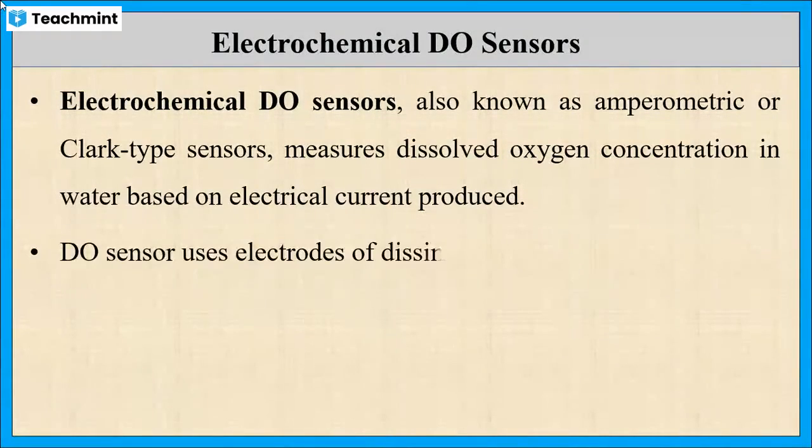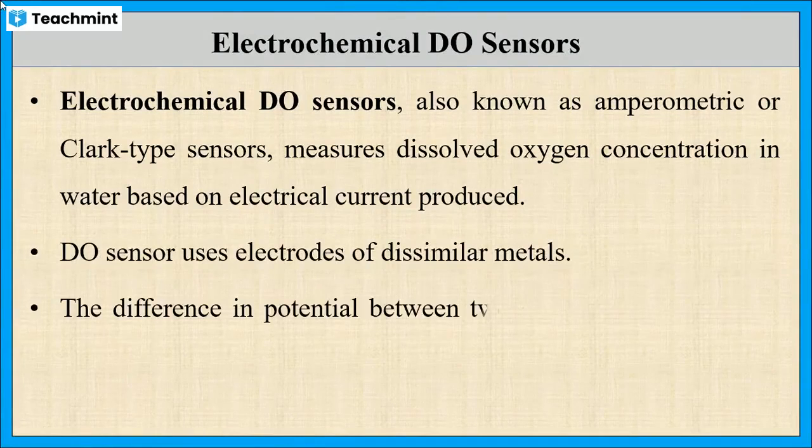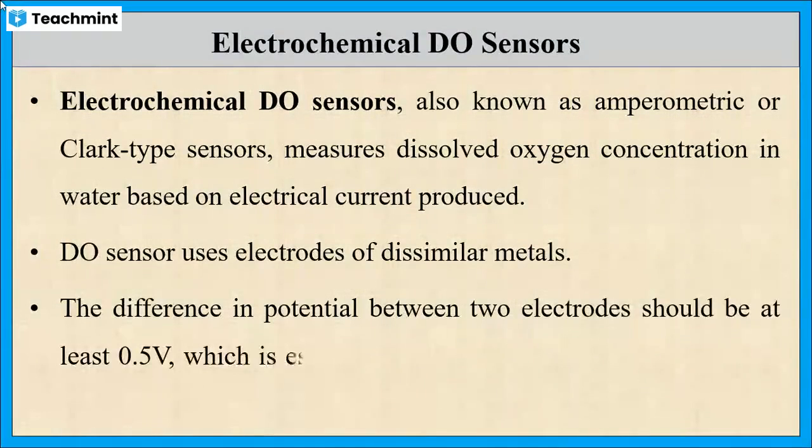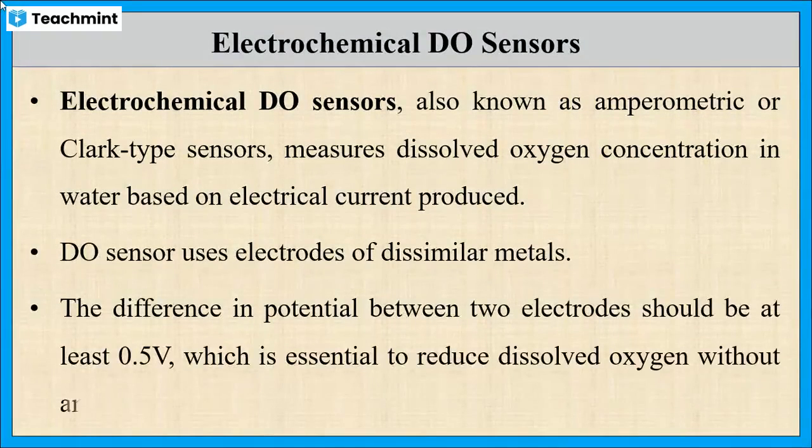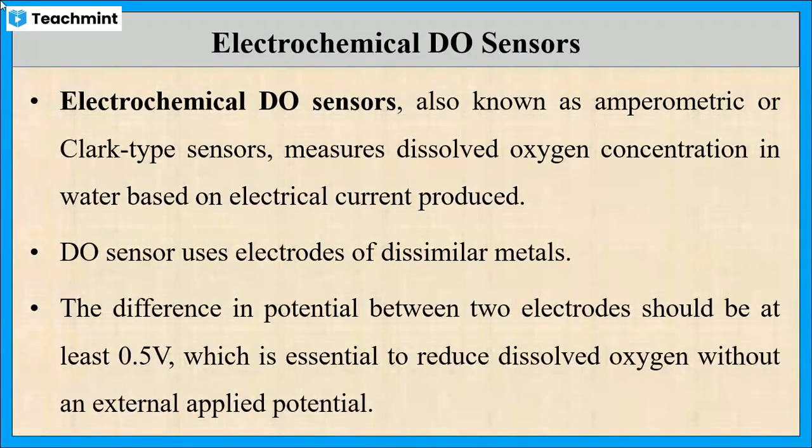Usually, dissolved oxygen sensors consist of two electrodes of different metals. Whenever selecting the metal, the potential difference between two electrodes always should be more than 0.5 volt so that it will reduce the dissolved oxygen without the help of external potential.